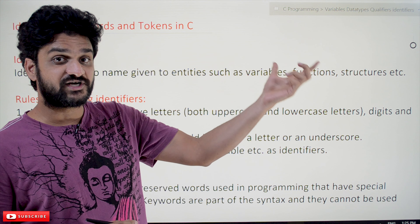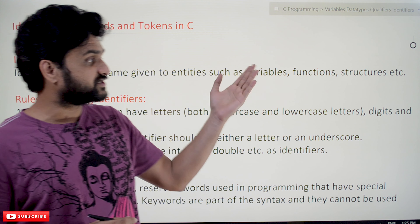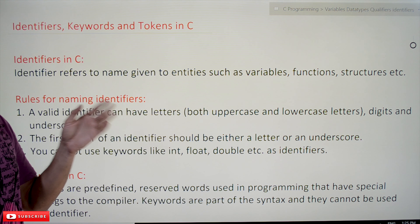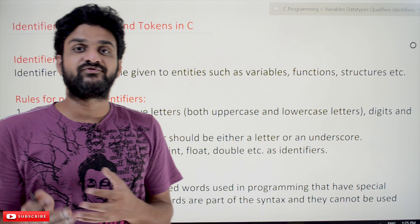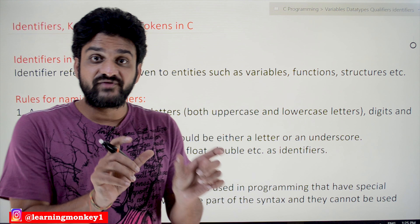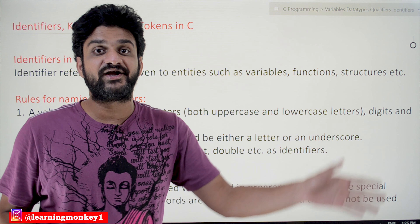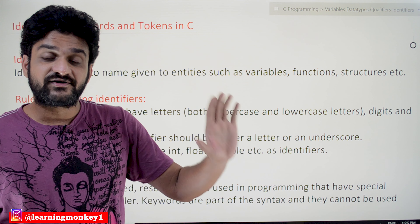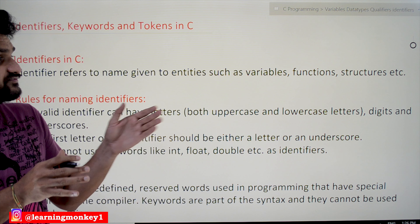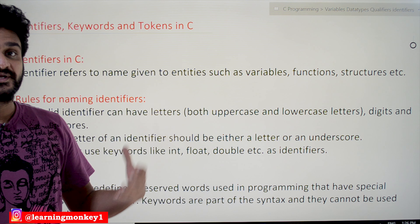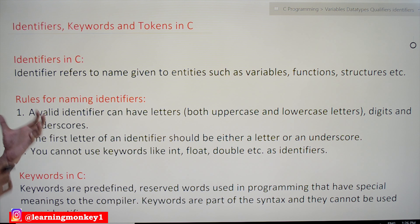The name provided to variables, structures, and functions is what we call identifiers. For example, int a, b, c — here a, b, c are identifiers. If you consider int height, weight — height and weight are variables, and the names we use are called identifiers. printf is also an identifier — it is a function name. So the names used for variables, functions, and structures are called identifiers.